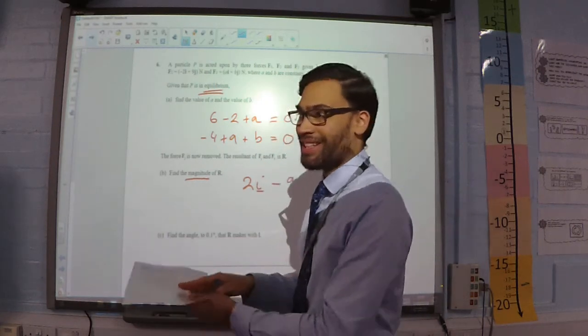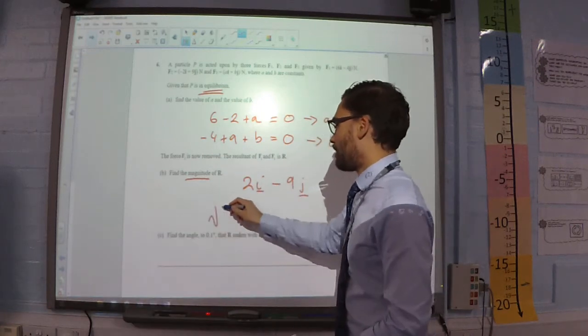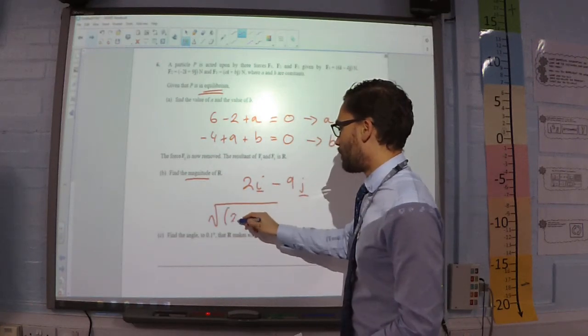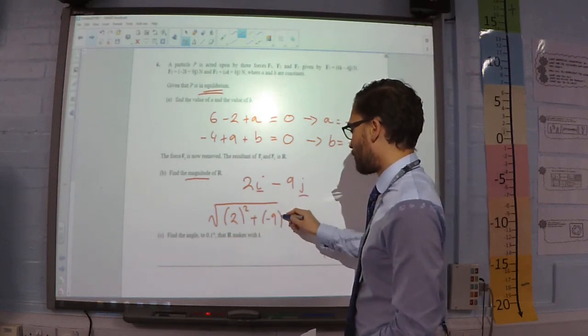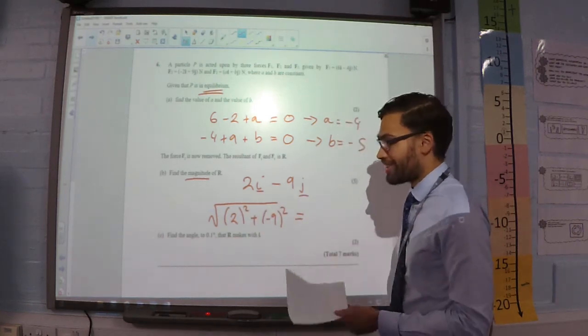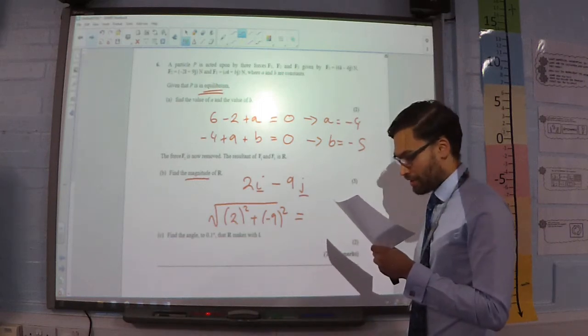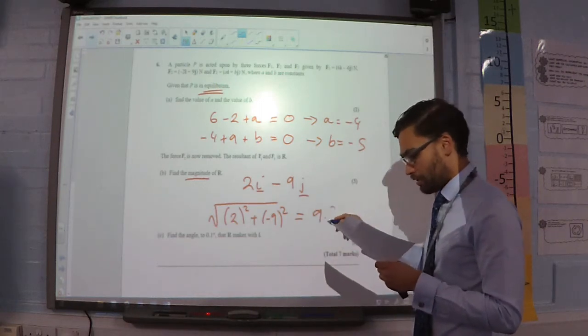The magnitude of it is the size of it. Which, in this case, is going to be 2 squared plus negative 9 squared, square root. So, Pythagoras theorem tells us the magnitude of that is 9.21.